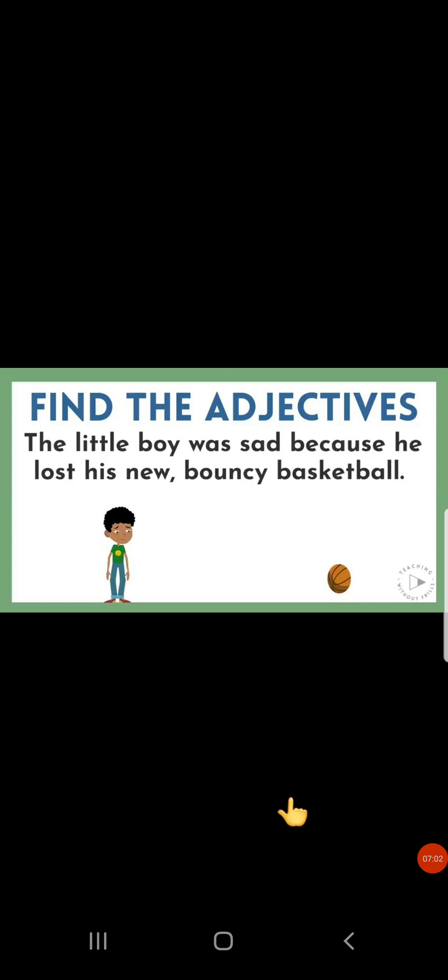So, let's start doing this exercise. Here I have a sentence for you and you have to find out the adjectives. I am going to read the sentence out for you. The little boy was sad because he lost his new bouncy basketball. So, for finding out the adjectives, you first have to find out the nouns. Noun in this sentence: boy and basketball. So, what are the words which are describing this boy? Giving you the information about boy. Yes, little and sad.